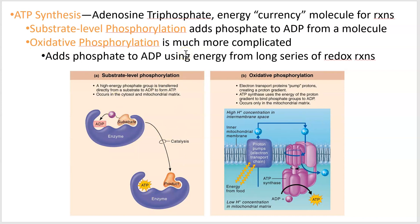Oxidative phosphorylation is much more complicated and will be our main focus. It involves a long series of redox reactions that provide the energy to grab a phosphate group and add it to ADP to make ATP. The end result is the same — phosphate added to ADP to make ATP — but the way it is powered differs. And that's the end of this video: two whole slides.